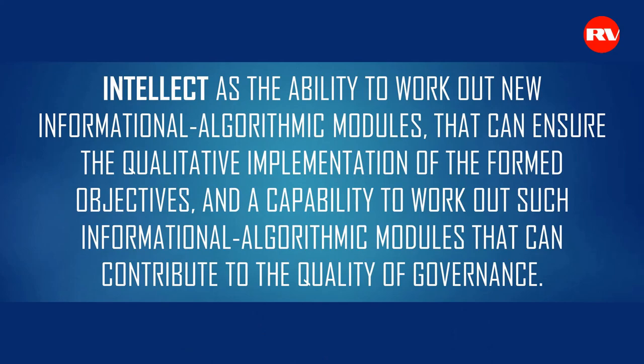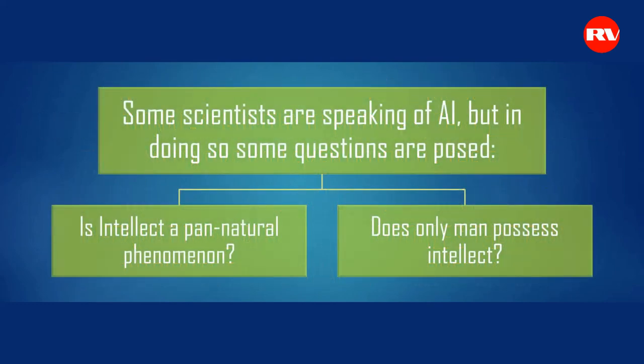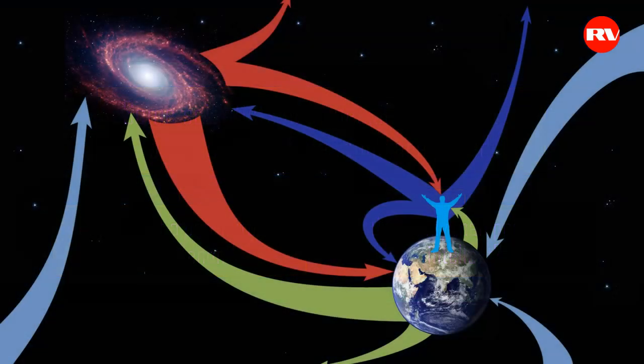A question arises: is it only man that possesses intellect? Some scientists are speaking of artificial intelligence. Some questions are posed — is intellect a pan-natural phenomenon? If yes, then man is one of many intellects. Does only man possess intellect? If yes, man is unique. I will demonstrate that man is not the only one to possess intellect, but other systems, including creation as a whole, also possess intellect.